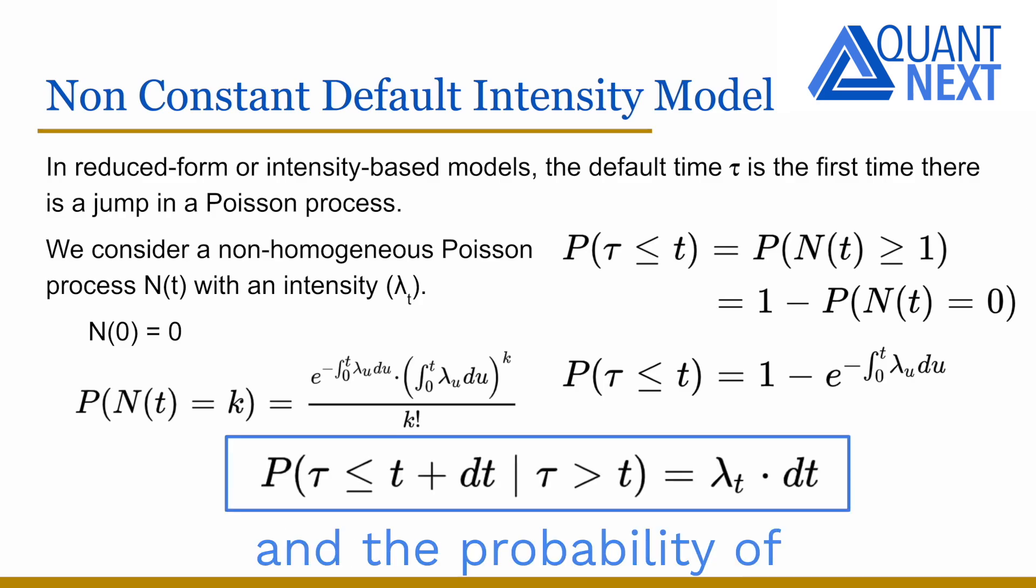And the probability of default between t and t plus dt, knowing that there was no default before t, is equal to lambda_t times dt.